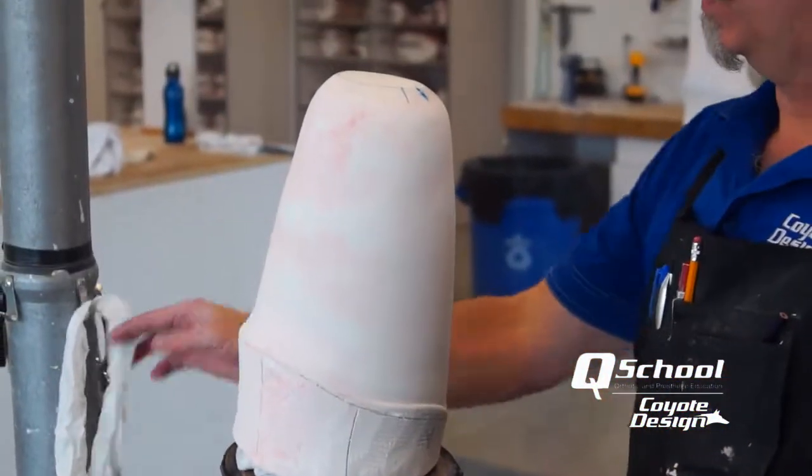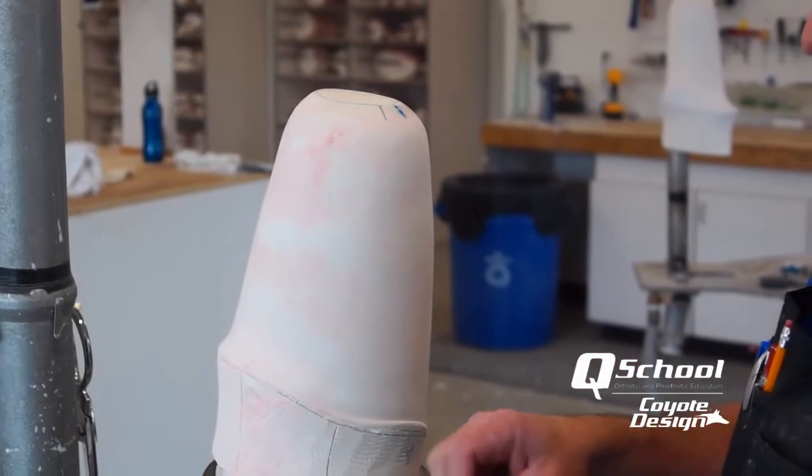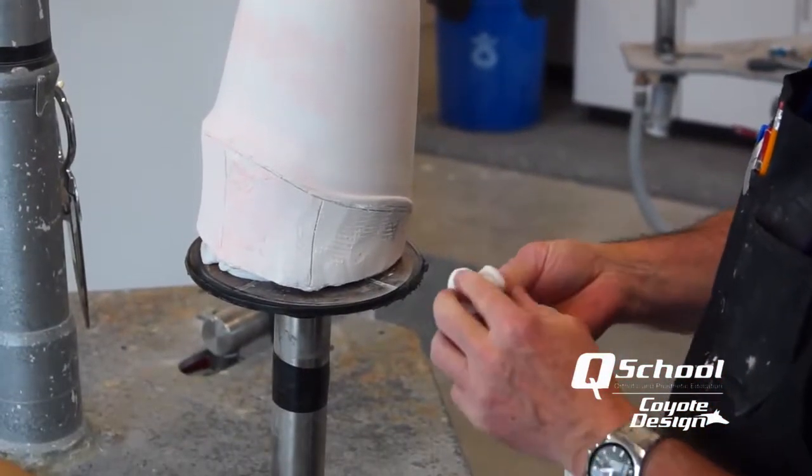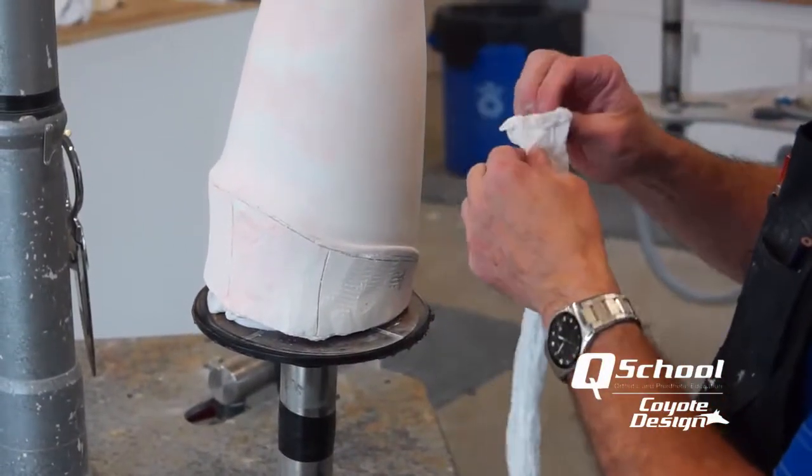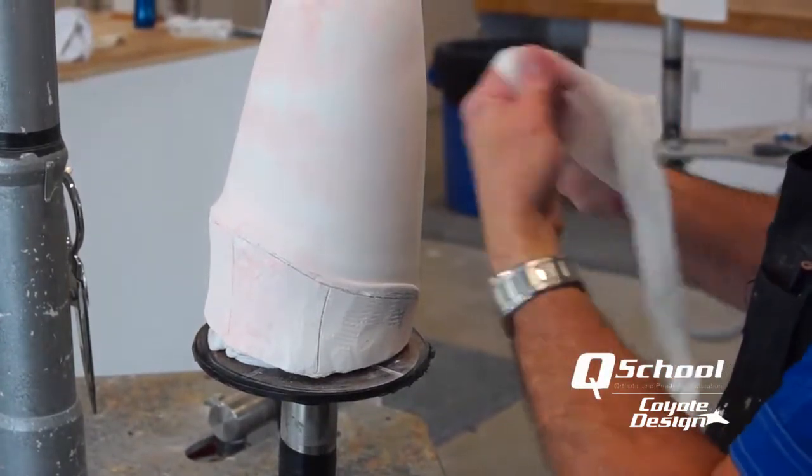So today we're making a Vivac test socket using our Coyote lanyard puck and the Coyote test socket connector. So our first socket here out of Vivac, we're describing how we want to put on our puck and get everything ready.